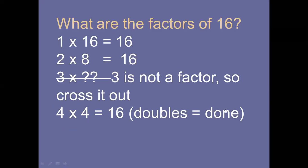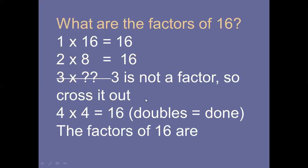So the factors of 16 are: 1, 2, 4, 8, and 16. When a number is doubled — meaning the same number appears twice in the pair — you write it only once. The rule is: when you find a doubled or repeated pair, you are done and don't need to check the next times table.